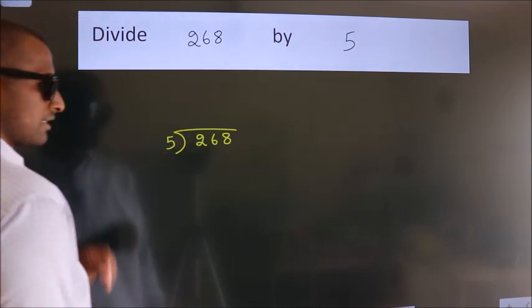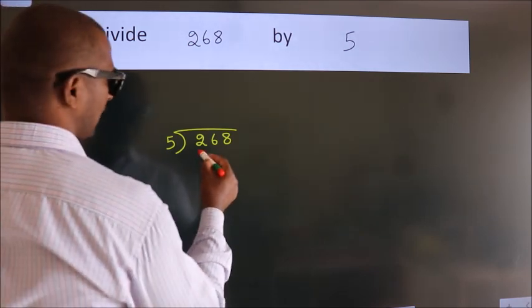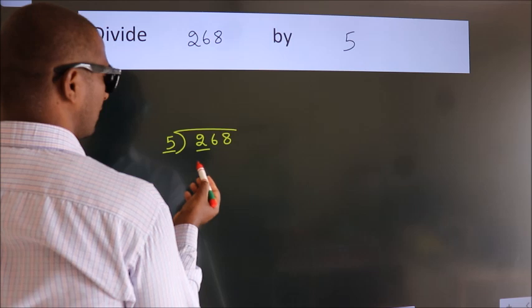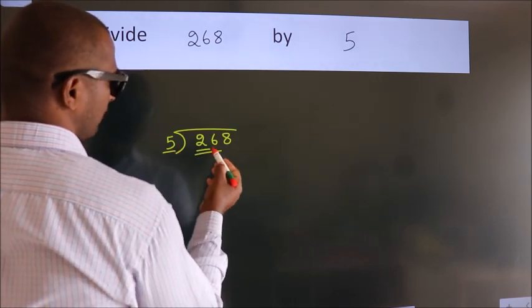This is your step 1. Next, here we have 2, here 5. 2 is smaller than 5, so we should take 2 numbers: 26.